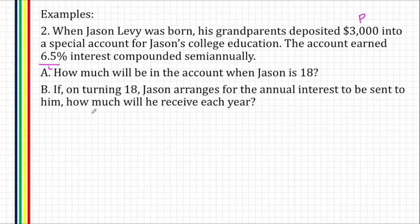So for the formula for letter A, FV, our present value or principal amount is $3,000, times 1, plus the rate, which is